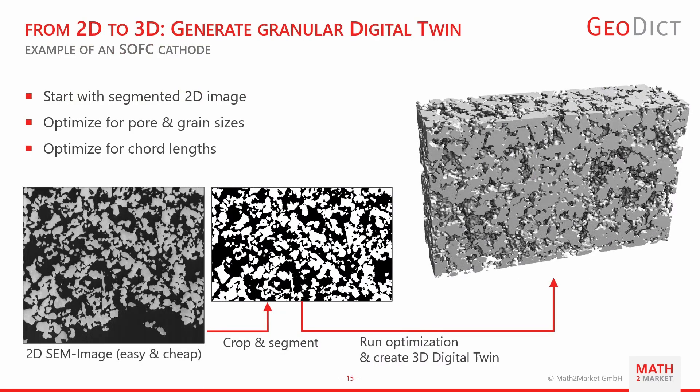It's not always possible or affordable to obtain a full 3D scan. If you only have a 2D SEM image, a new GeoApp in GeoDict can create a 3D structure from it: you segment the 2D image and the 2D-to-3D GeoApp generates a three-dimensional digital twin for isotropic materials.